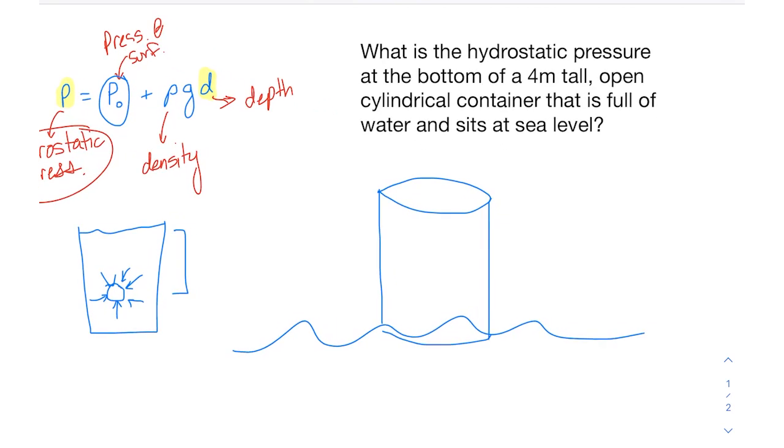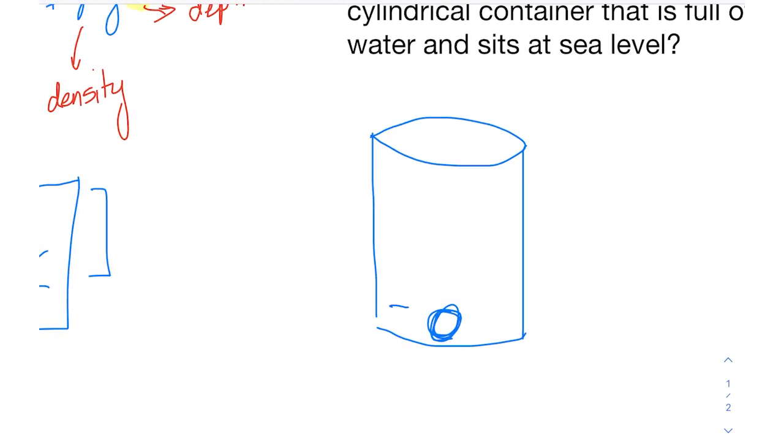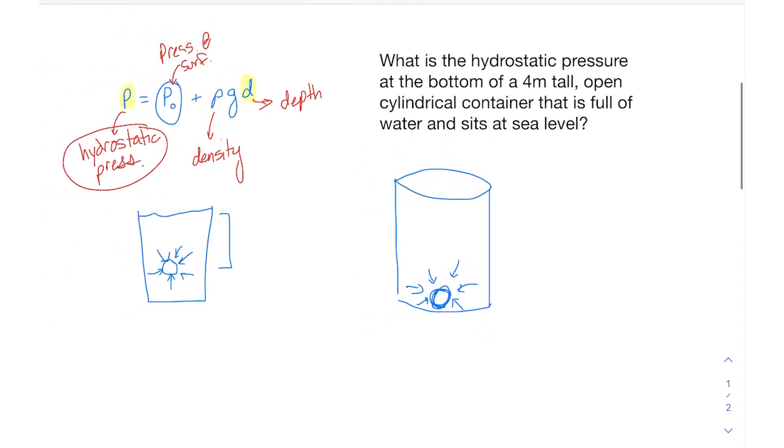So they want to know what hydrostatic pressure would an object experience if it were in that cylindrical container. Let's use a fictitious object here, and just to make it easy, I'm going to erase our sea level just so it's easier to see everything. Basically they're saying what hydrostatic pressure is the fluid applying to this object that is at the bottom of this container.